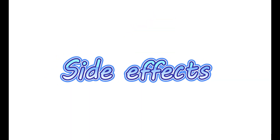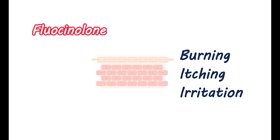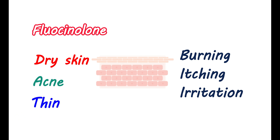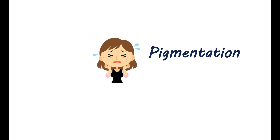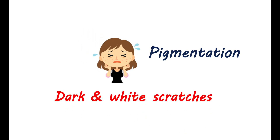Now let's see the side effects. You may experience a few local adverse reactions, including burning, itching, and local irritation on the skin. You may get some marks on the skin that appear like streaks or lines, and you may also have dry skin at the applied area. Small raised bumps may develop that look like acne, with tenderness and itching at these bumps. Your skin may become thin and easily fragile where you are applying the cream. Fluocinolone acetonide cream can also produce some change in pigmentation, leading to dark and white patches. You may also observe a red rash around the mouth and nose.